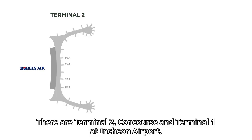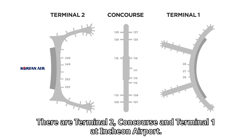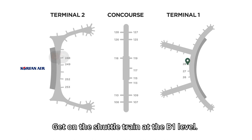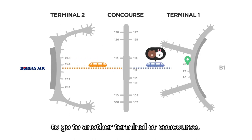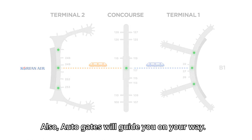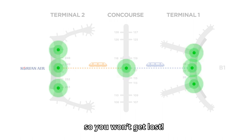There are Terminal 2, Concourse, and Terminal 1 at Incheon Airport. In case you need to go to another terminal to transfer, get on the shuttle train at the B1 level to go to another terminal or concourse. Also, Autogates will guide you on your way so you won't get lost.